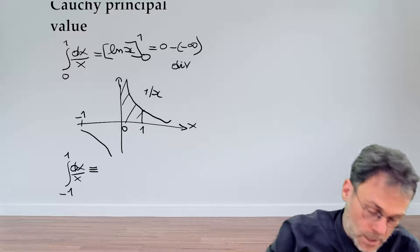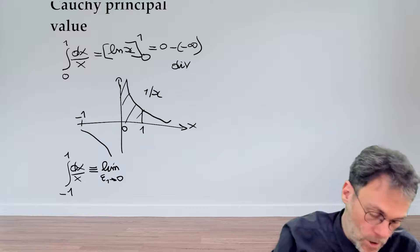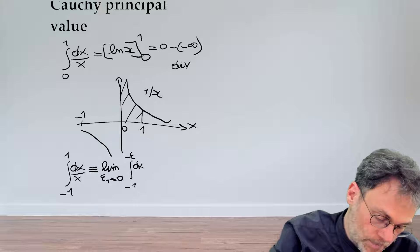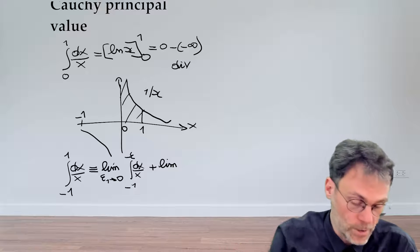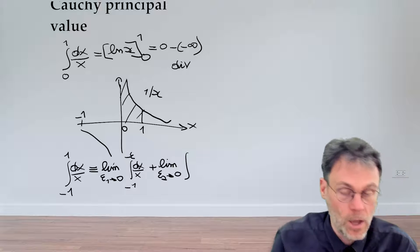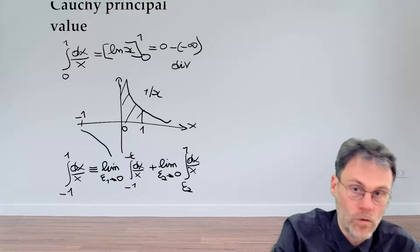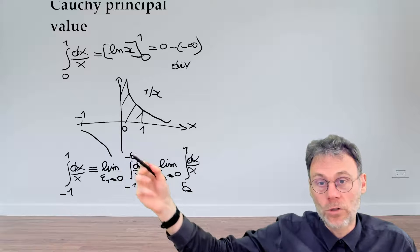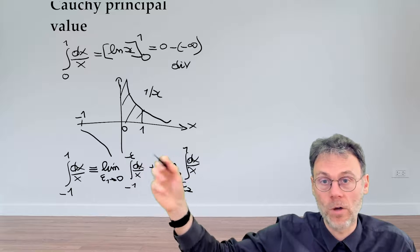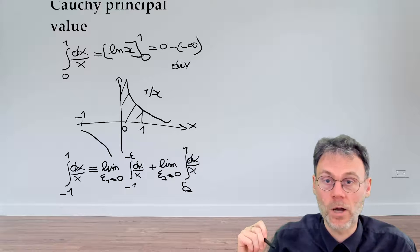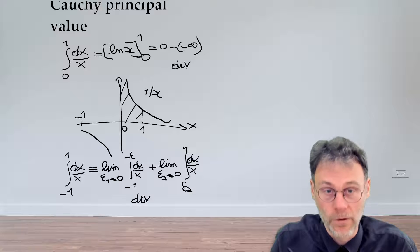So this should be read as the limit of epsilon 1 going towards 0 of the integral from minus 1 to minus epsilon dx over x, and then a completely independent, completely separate limit of epsilon 2 going towards 0 of the integral from epsilon 2 to 1 dx over x. Now this first term will go towards minus infinity, the second term will go towards plus infinity, but there's no relationship whatsoever between these two limiting procedures. This is why we say that this particular integral is undefined, an improper integral which diverges.